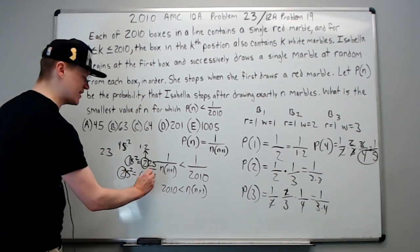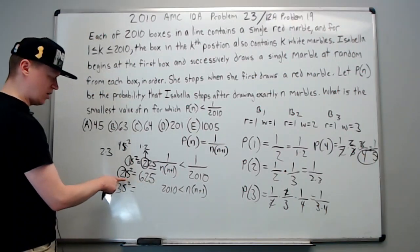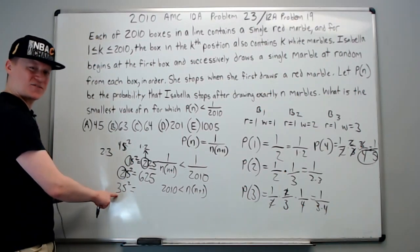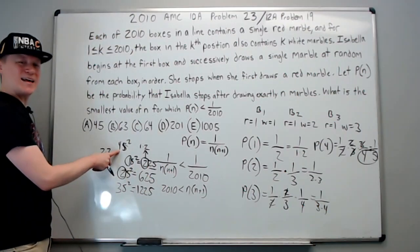For 35 squared, again all these numbers are going to end in 25. Three times the number after it in the number line, 4. Three times 4 is 12, 25.